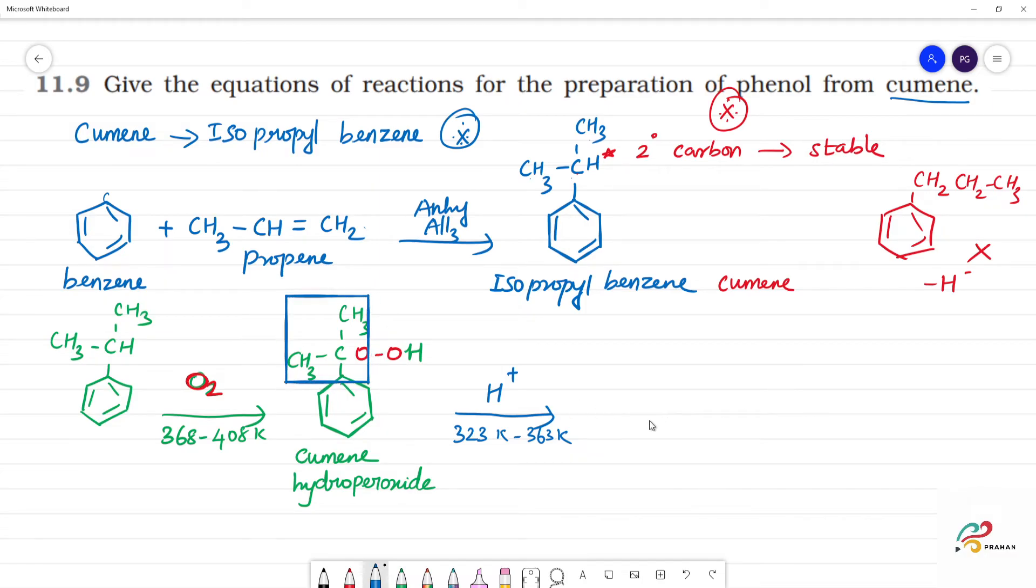This is C double bond O, and this is CH3. Next, we have phenol with OH. This OH group joins.